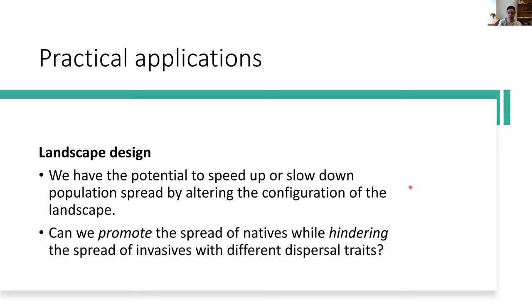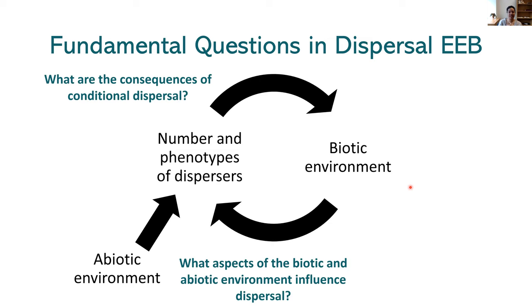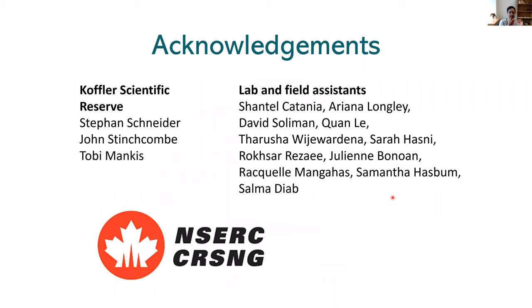Just to wrap up: I hope I've convinced you that the biotic environment influences the number and phenotypes of dispersers, and that this can feed back to influence the biotic environment. We have to start considering individual variation in dispersal and conditional dispersal across a wide number of fields in biology in order to understand the dynamics of ecological and evolutionary systems. I want to thank the people who helped me in the field, at the Koppler Scientific Reserve, and funding sources. I will take any questions.